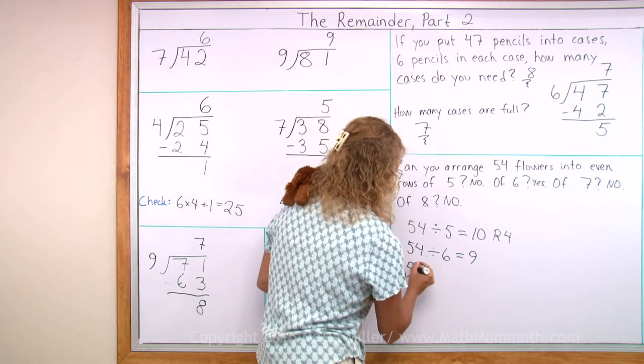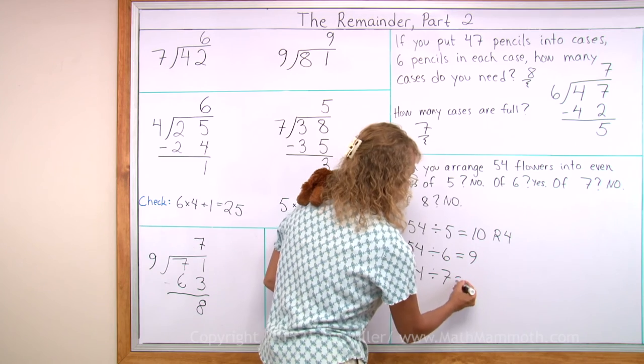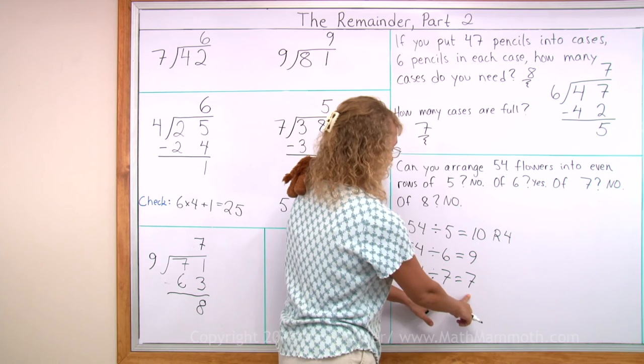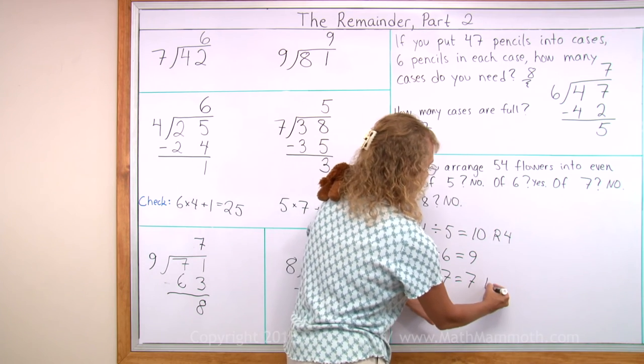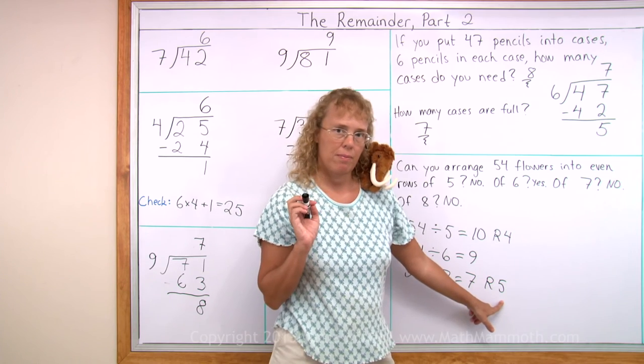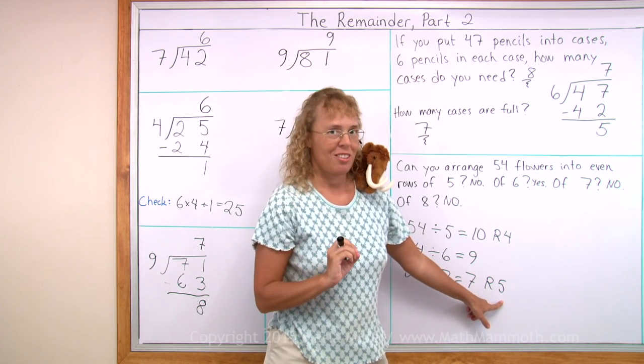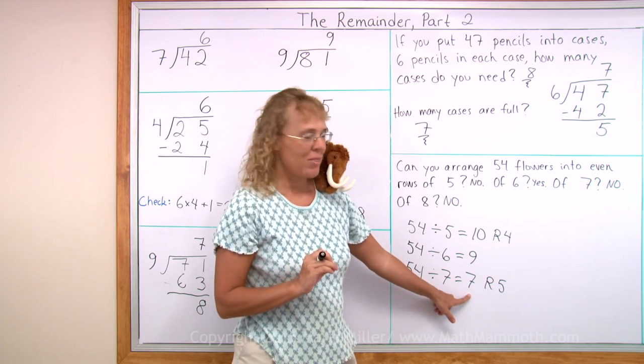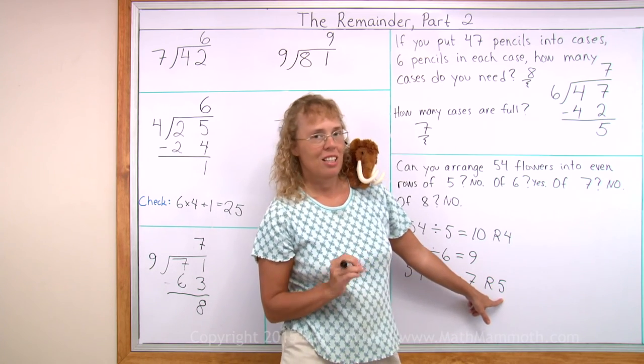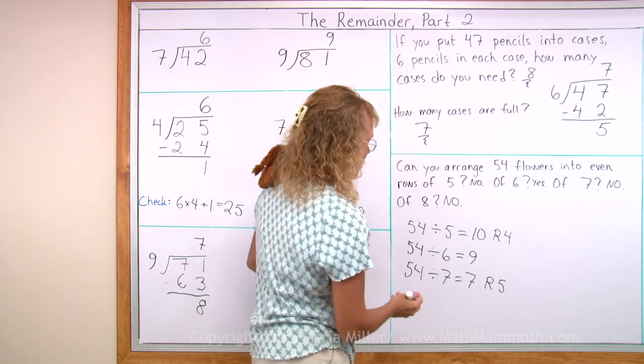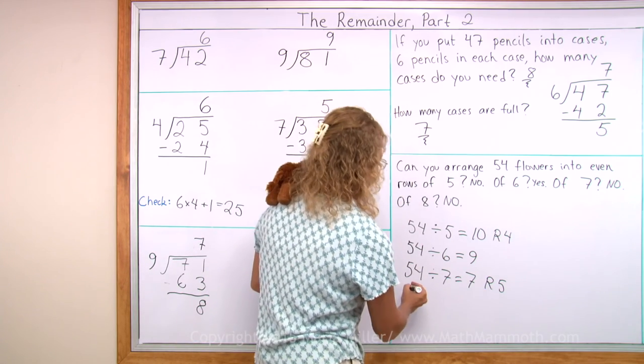And then 54 divided by 7. 7 goes into 54 7 times. 7 times 7 is 49, so the remainder is 5. What does it mean now? What does this 5 mean? It's your leftover flowers, right? In other words, you get 7 rows, and then you have 5 flowers left over. Maybe you want to make a row with them, or maybe not. But those are your remainder leftover flowers.